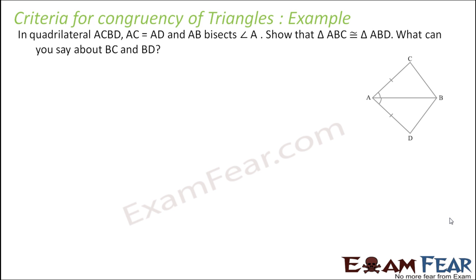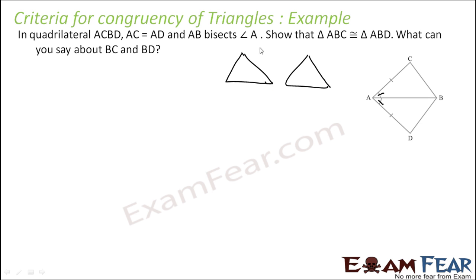Next, there is a quadrilateral ACBD. You have to follow the order: A, C, then B, then D. It is given that AC is equal to AD, and AB bisects angle A, meaning this angle is equal to this angle. We have to prove that triangle ABC and triangle ABD are congruent. Try to pause the video and draw the triangles on your own.